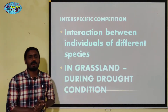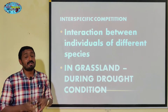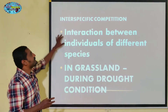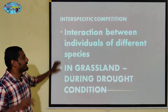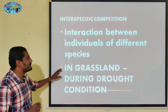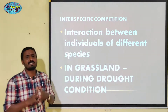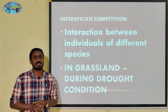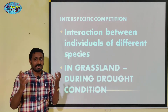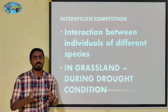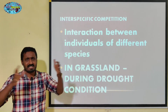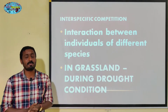The next type is interspecific competition — there are two different species competing for survival. This is the interaction between individuals of different species. For example, in a grassland consisting of different kinds of species — grass, grasshoppers, insects, ant populations, bacteria in the soil — all these different organisms compete.